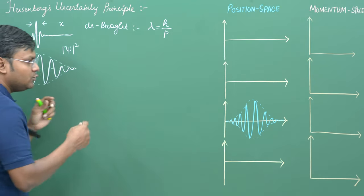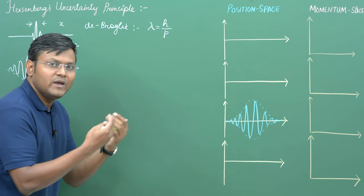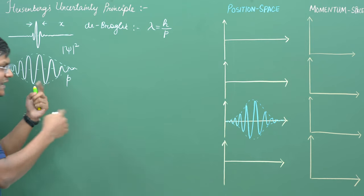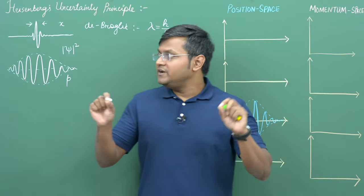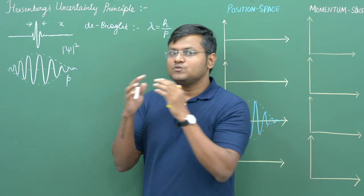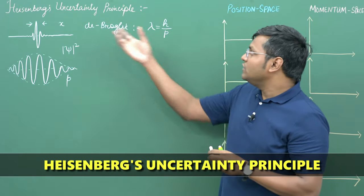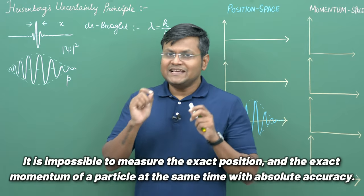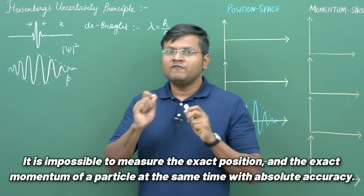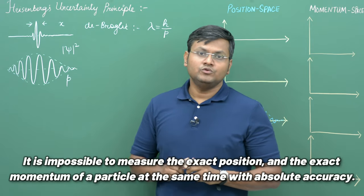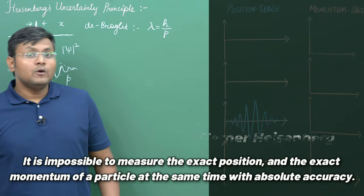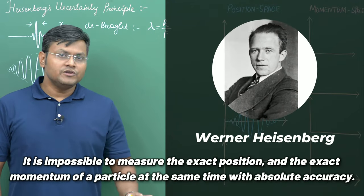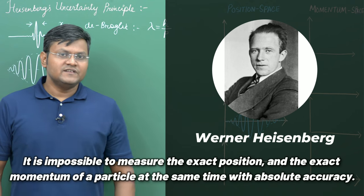For a spread-out wave packet, we are more sure about the wavelength or momentum and less sure about its position. This inverse correlation between the uncertainties of position and momentum is what leads to the Heisenberg uncertainty principle. It simply states that it is impossible to measure the exact position and exact momentum of a particle at the same time with absolute accuracy. This principle was given by Werner Heisenberg in 1927 and represents one of the most important laws in physics today.